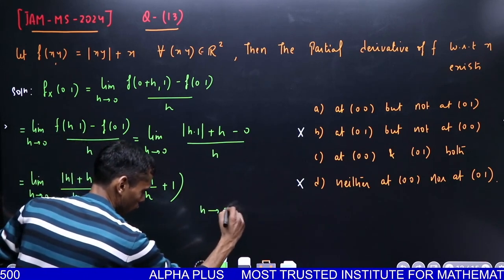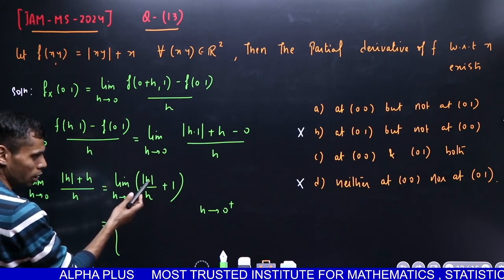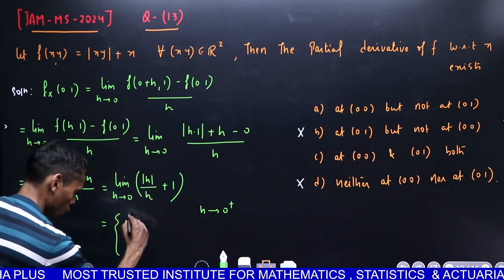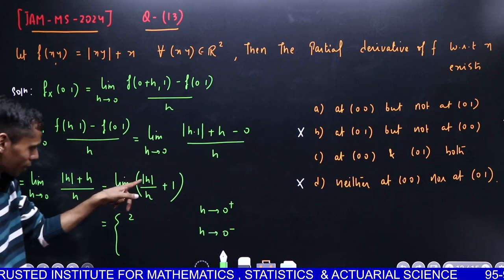This will have two answers. If h approaches 0 from the positive side, then h is positive, so |h| can be replaced with h. This gives h/h = 1, so 1+1 = 2.